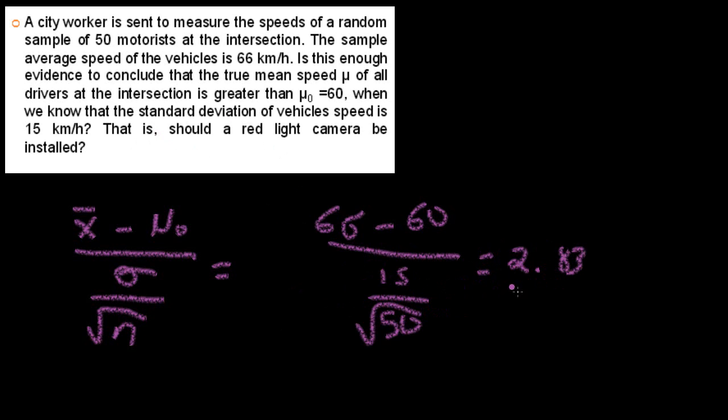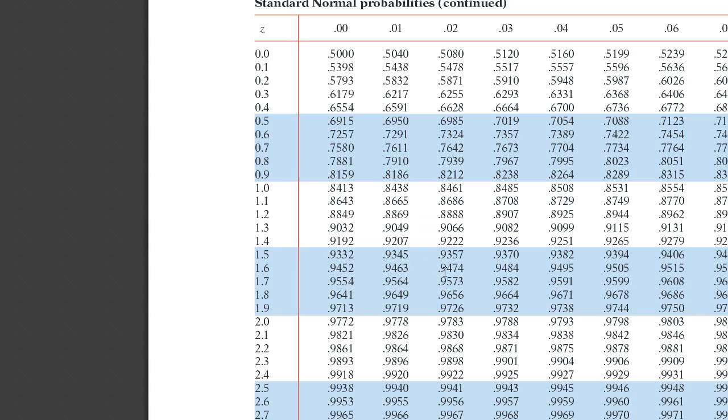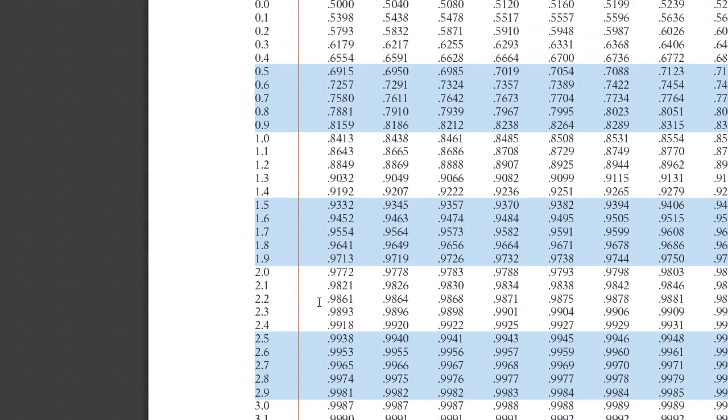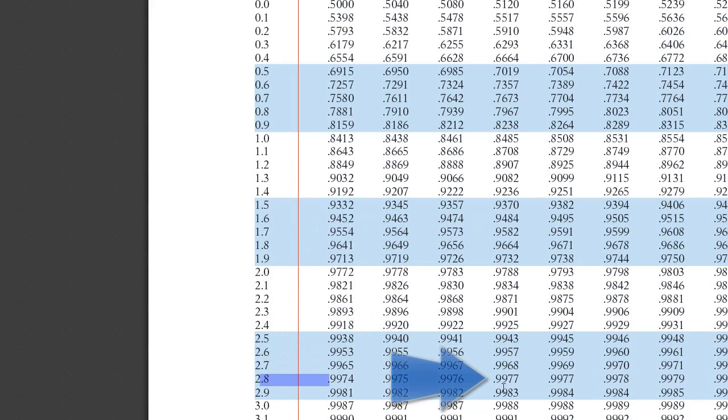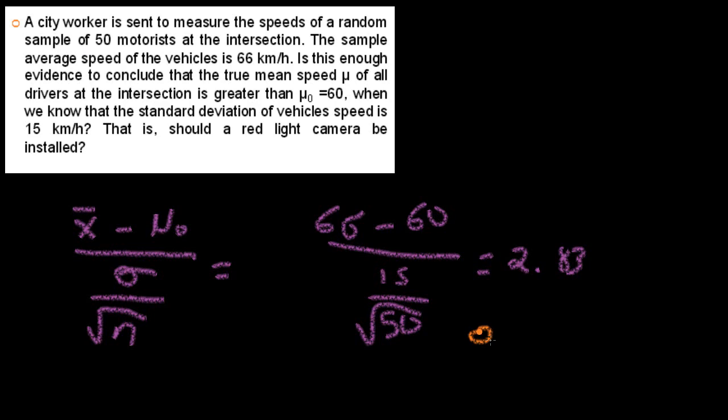Now it's just a matter of going to the standard normal probability table and getting out an associated probability to this z score, this z value. So here's the table. Let's go and try find our value. We're looking for 2.83. Here's 2.8 and the 3 is located right here, crossing them down. We have a probability of 0.9977.